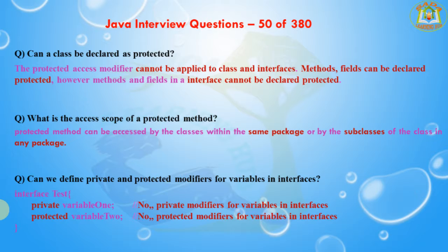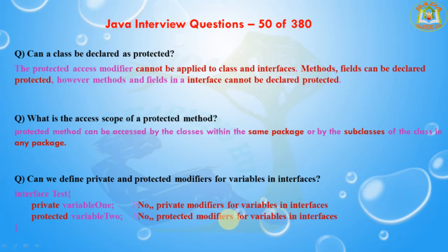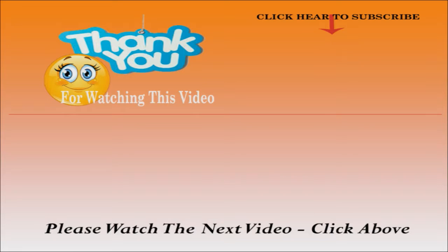The next question is: can we define private and protected modifiers for variables in an interface? No, it's not possible. Here I am creating a test interface with a private variable and a protected variable — it's not possible. No private modifiers and no protected modifiers are allowed for variables in an interface. It is not possible to declare variables inside an interface as private or protected.